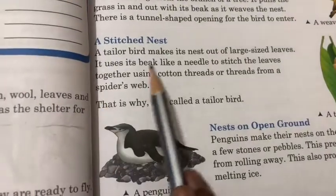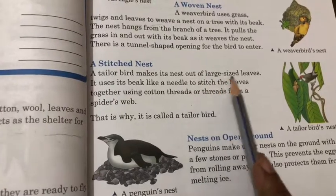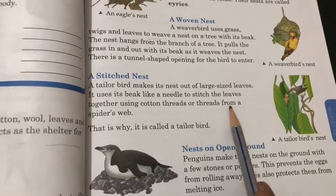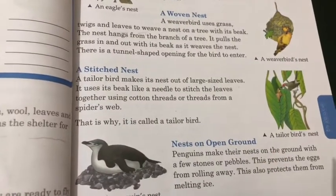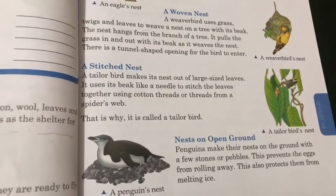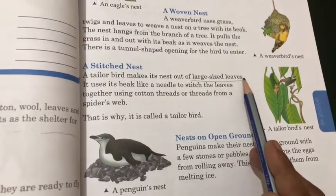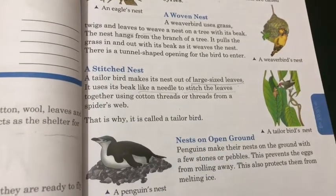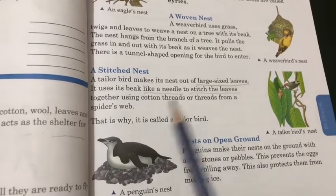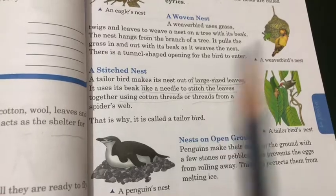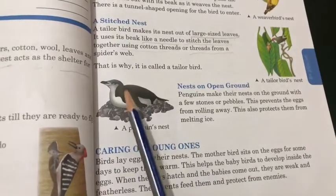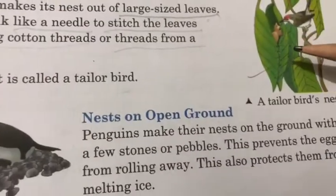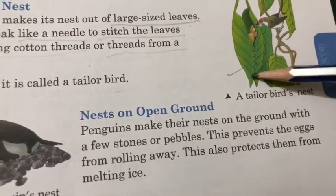A stitch nest: A tailor bird makes its nest out of large-sized leaves. It uses its beak like a needle to stitch the leaves together using cotton threads or threads from a spider's web.